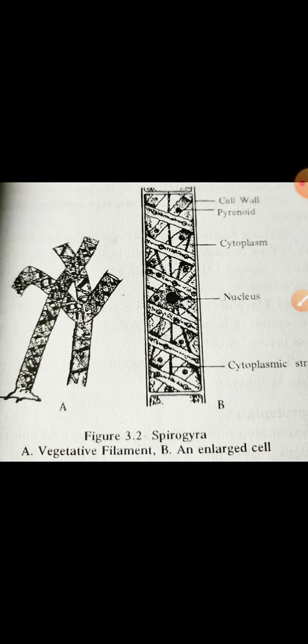Genus Spirogyra. One to several ribbon-like chloroplasts are located in a parietal position, and a conjugation tube is produced during sexual fusion. These two characters confirm that the genus is Spirogyra. So in classification: group Algae, division Chlorophyta, class Chlorophyceae, order Zygnematales, family Zygnemataceae, and genus Spirogyra.